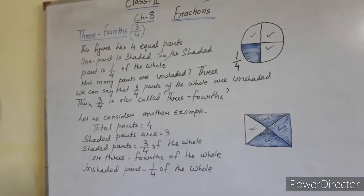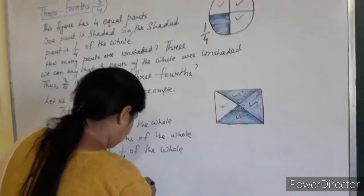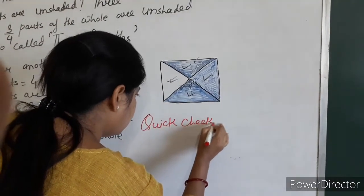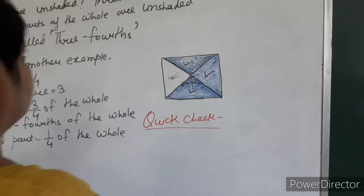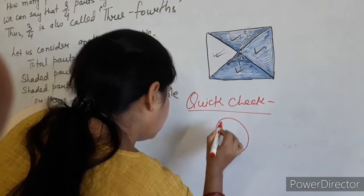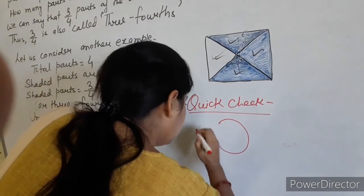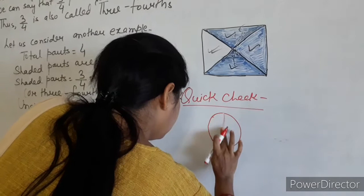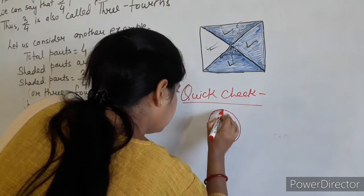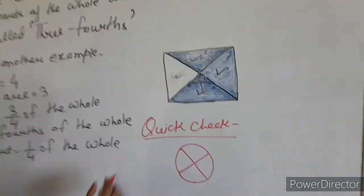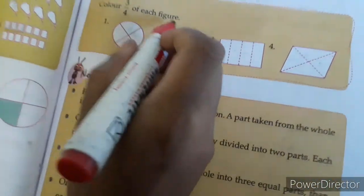So, I am going to show you one example from the quick check. This is one circle I have drawn. This is from your book. Color 3 by 4th of each figure.